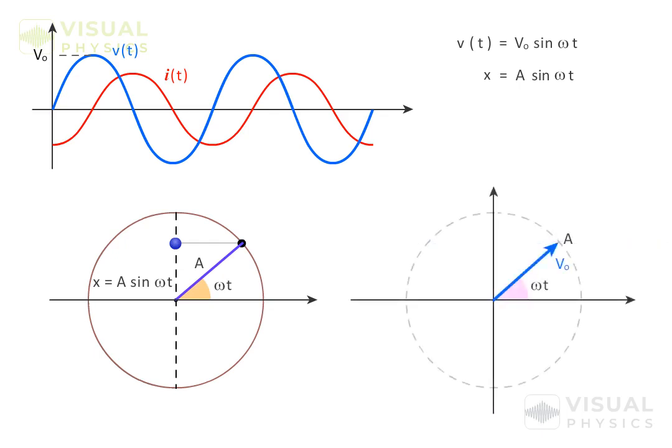Similarly, we can represent alternating voltages as a projection of a vector rotating anti-clockwise about the origin.